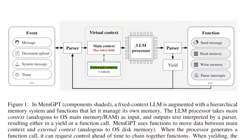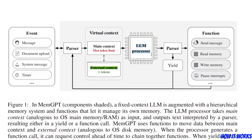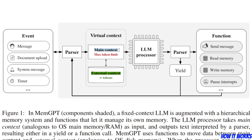In simple words, here is how it works. You have the LLM — let's assume it is GPT-4. It has a virtual context which comprises two different components. One is the main context, that is the context window of the LLM. For GPT-4, this is going to be around 8,000 tokens. The second component is the external context, which we'll look at in a moment.